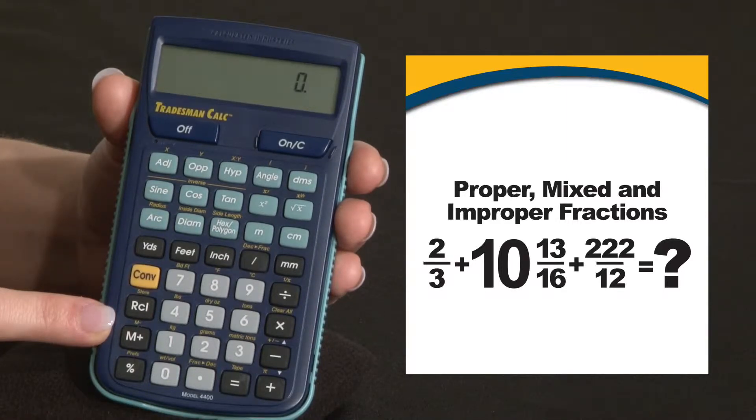You can enter and combine all denominators of architectural based fractions together, down to sixty fourths with or without inch units.